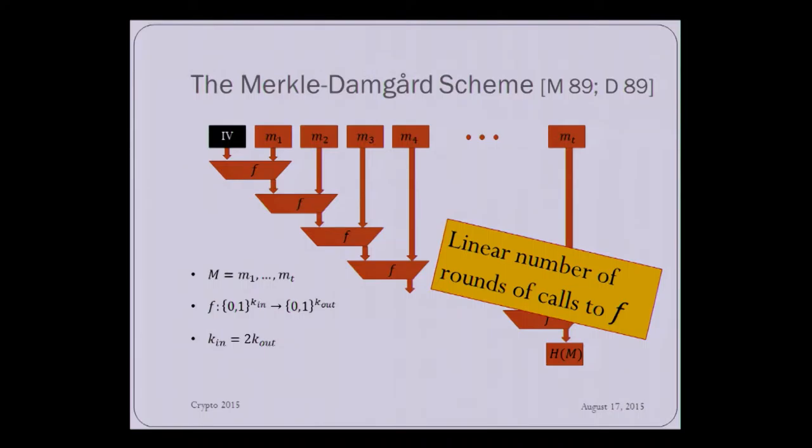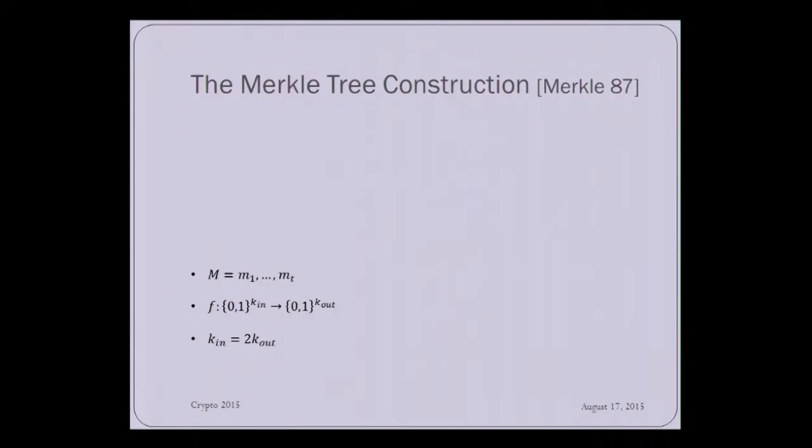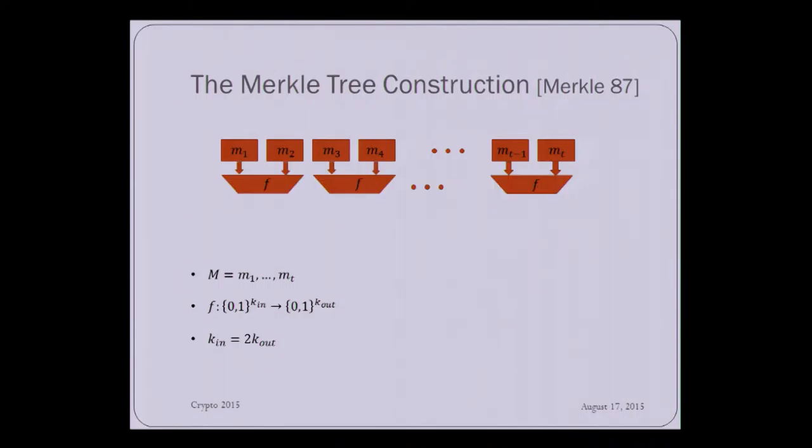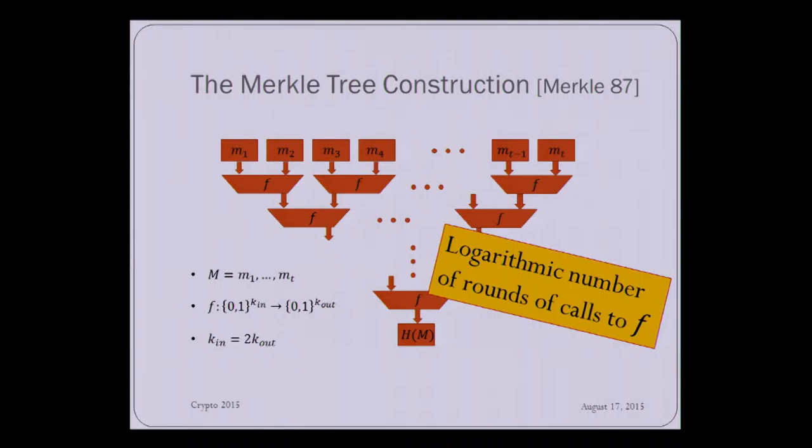So this is a very good domain extension scheme, but not when you consider the complexity, the parallel complexity. So maybe the Merkel tree is an improvement, where in this scheme, f is applied in a form of a binary tree, where at each level, we apply f to the results of the previous level. And finally, the output of the scheme is the output at the root of the tree. And this is a great improvement. We have an exponential improvement from being linear. We have a logarithmic number of rounds, of course, to the underlying function, but we would like to be even better than that. We'd like to go constant.